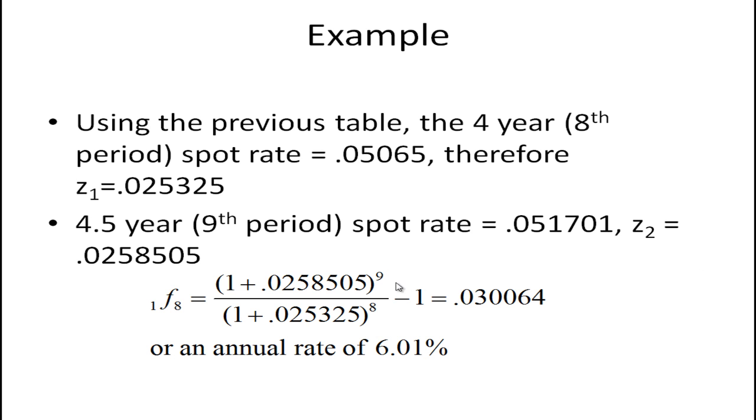And then just substituting into this equation we get the forward rate, the six month forward rate in period eight. And remember this is a six month rate, so we should double it. We should multiply by two to get the annual rate of 6.01%.